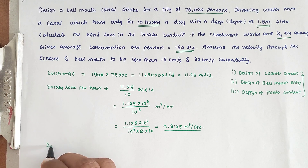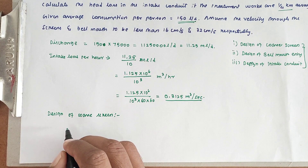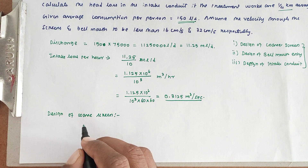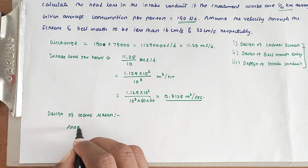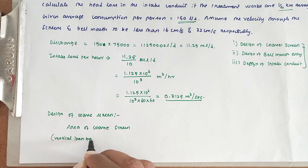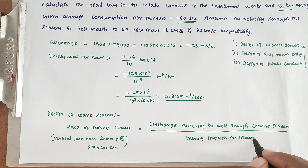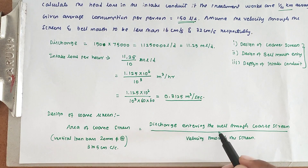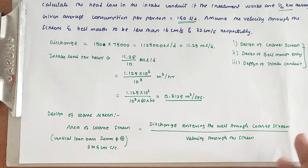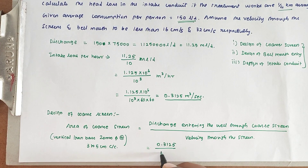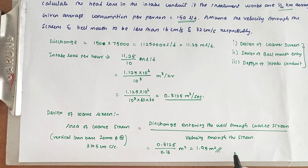Now, design of coarse screen. The screen may be made of vertical iron bars of 20 mm diameter at 3 to 5 cm center-to-center distance. Area of coarse screen equals discharge entering the well through the screen divided by velocity through the screen. Maximum velocity through the screen is 0.16 m/s. So area equals 0.3125 divided by 0.16, giving 1.95 m².